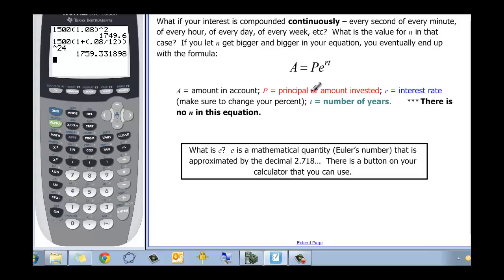A again is the amount in the account, P is still the principal or the amount invested, R is still our rate, and T is still the number of years. But you'll notice there's no N in this one, but there's this little E. So what is E? Well, E is a mathematical quantity, and I learned this as Euler's number, and that's approximately 2.718. It's a naturally occurring number. And there is a button on your calculator to do that, and the second LN that gives you E to the X.